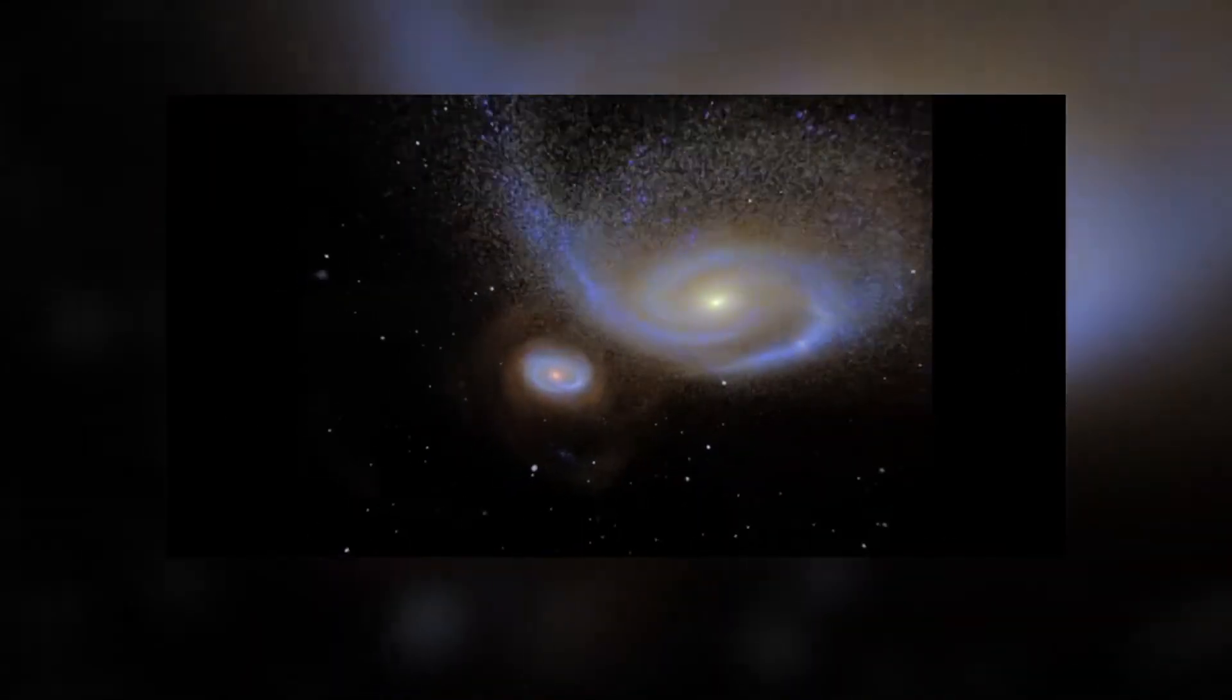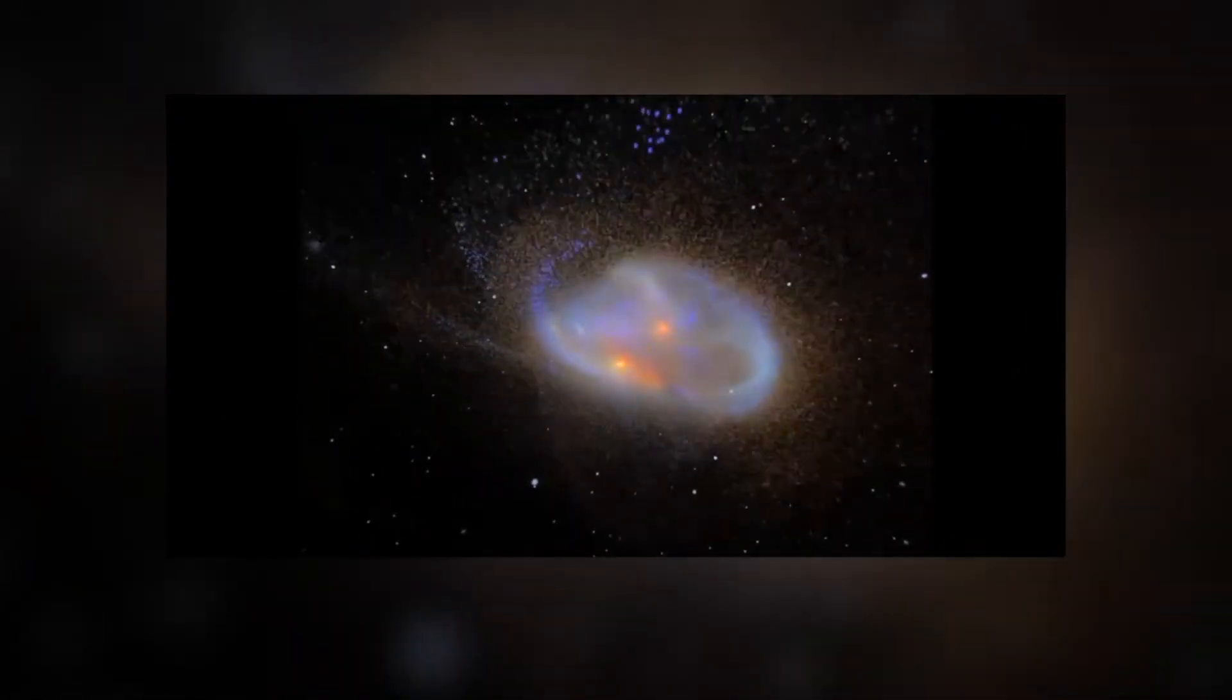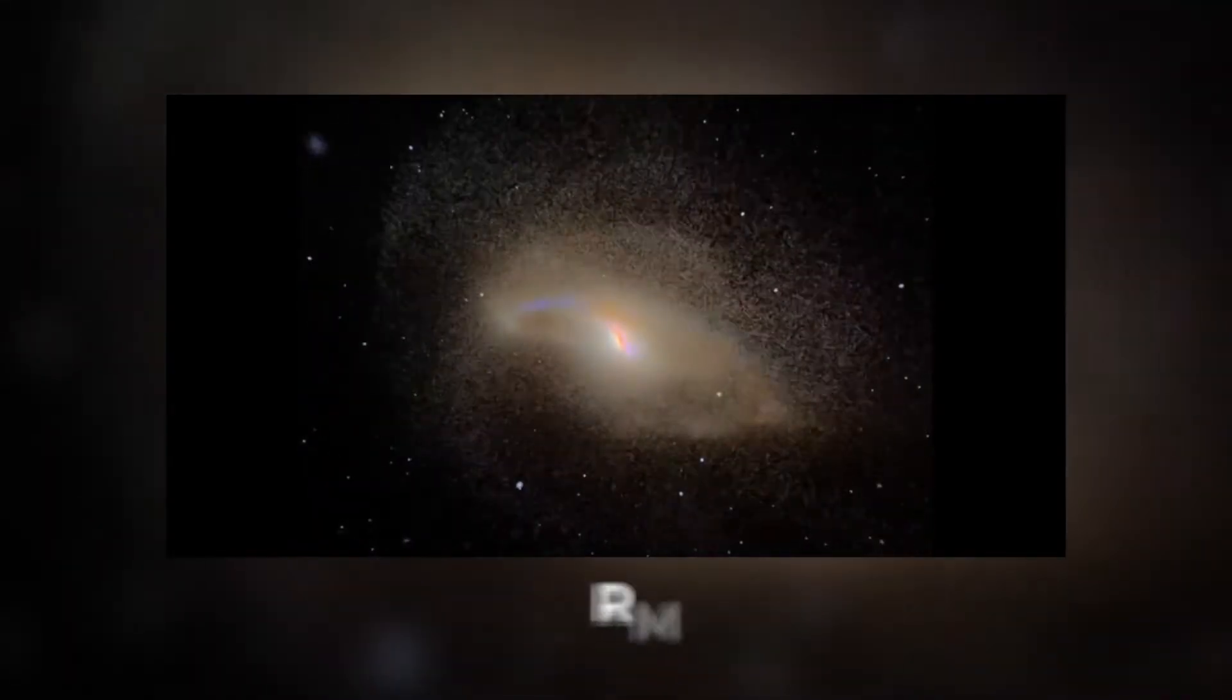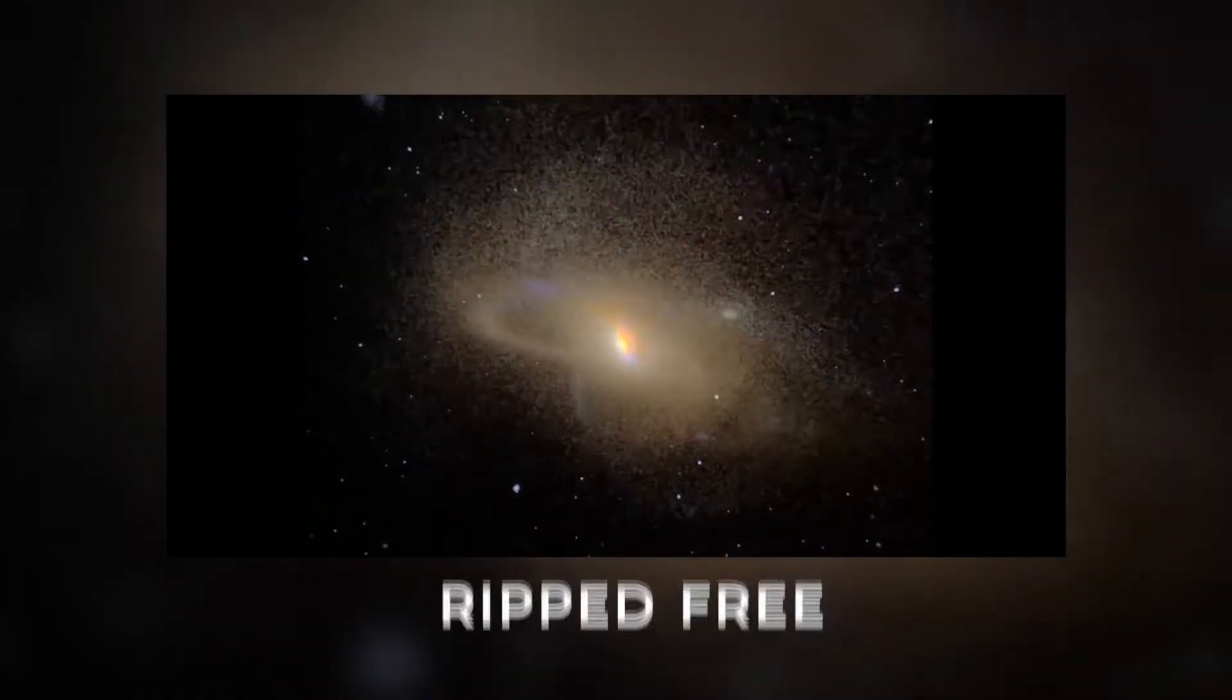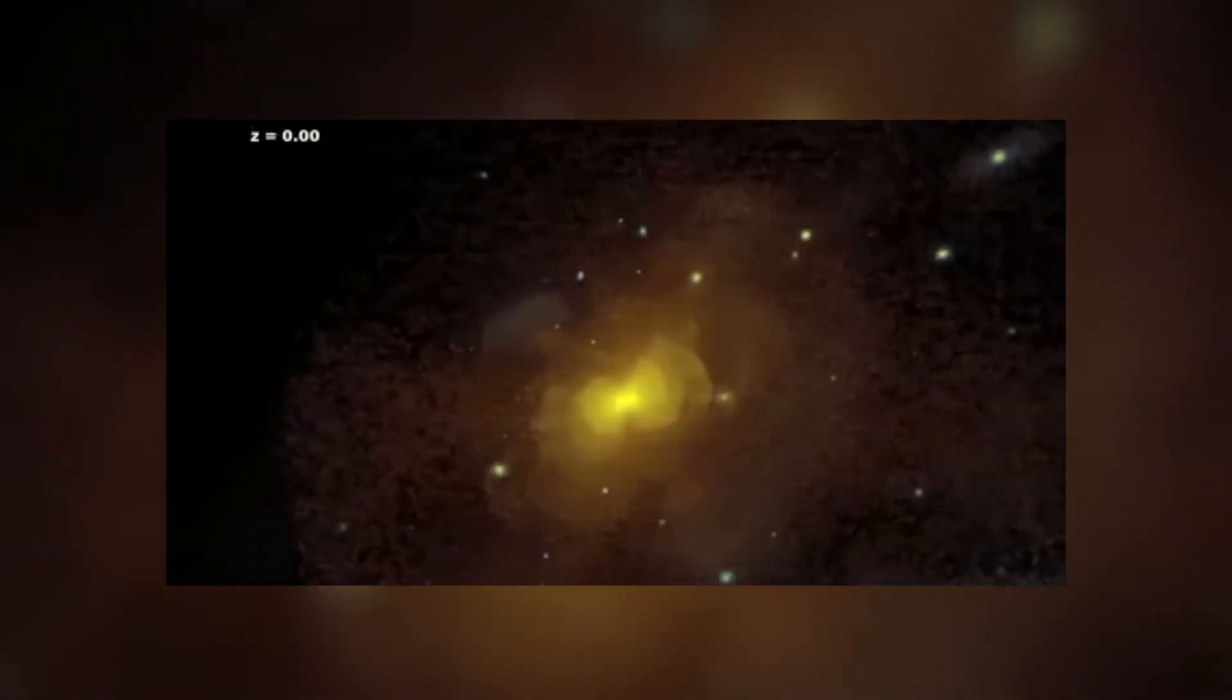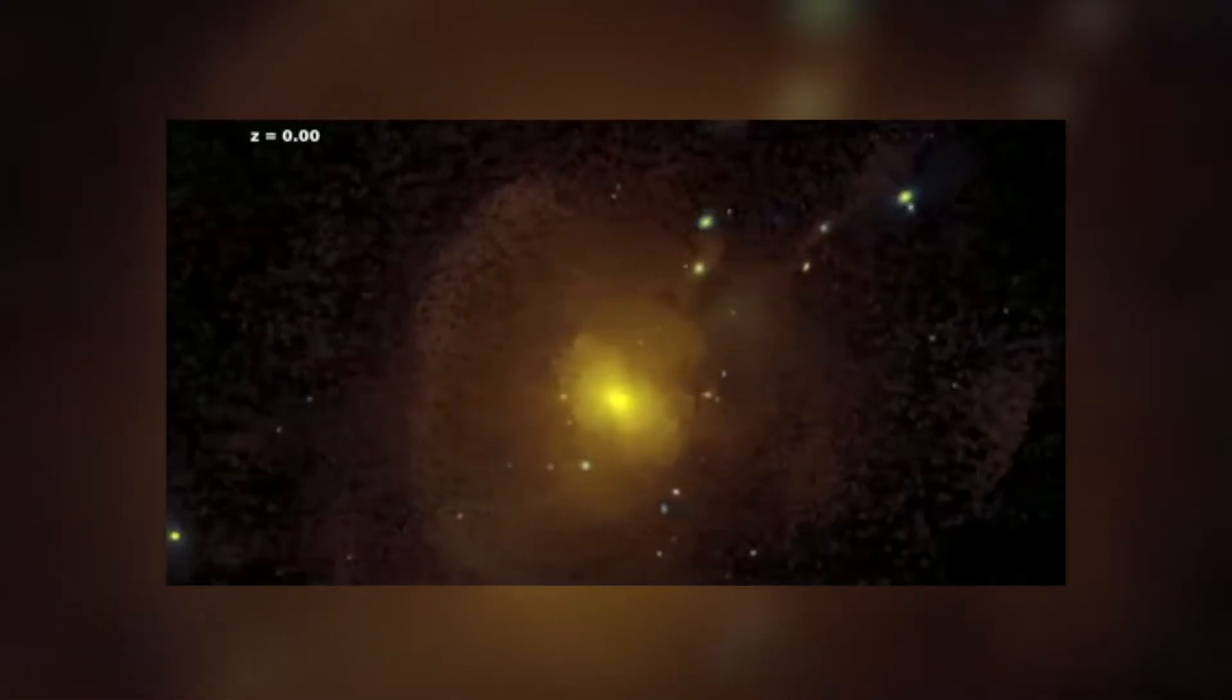Both galaxies will begin to accelerate towards each other, and as they begin to collide, they will begin spinning around each other while stars from both of them are ripped free and flung out into the cosmos. After the collision and settling, the two galaxies will become one larger galaxy.